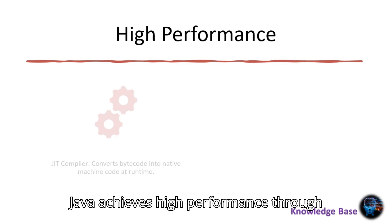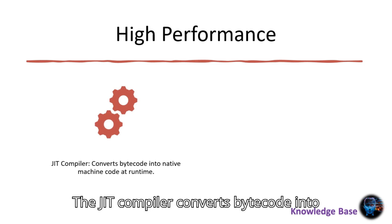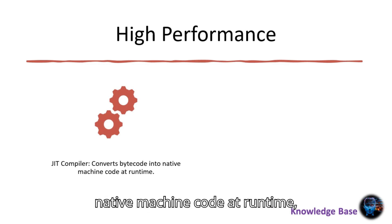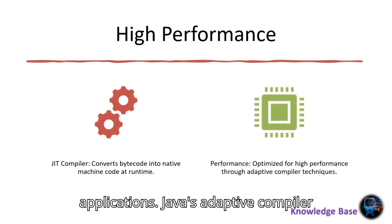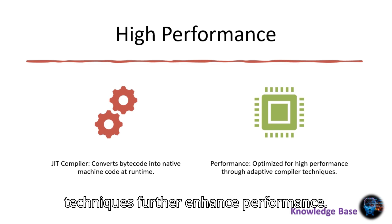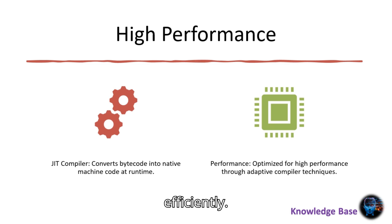Java achieves high performance through the use of a just-in-time (JIT) compiler. The JIT compiler converts bytecode into native machine code at runtime, optimizing the performance of Java applications. Java's adaptive compiler techniques further enhance performance, ensuring that applications run efficiently.